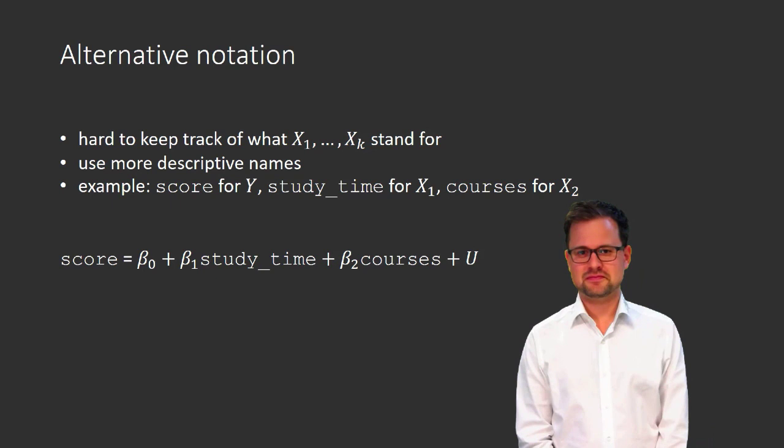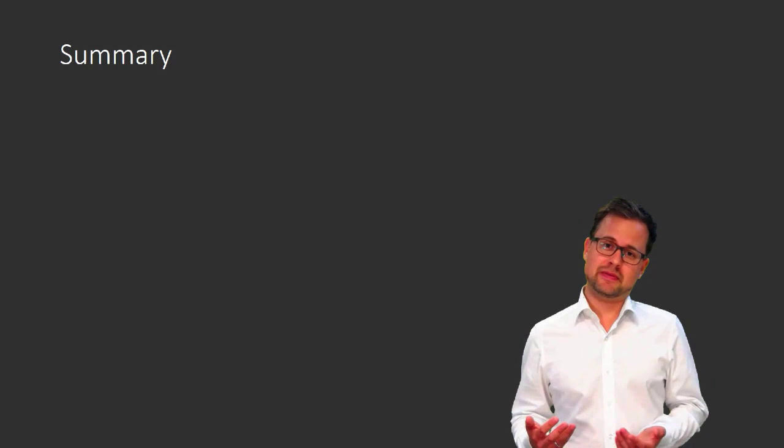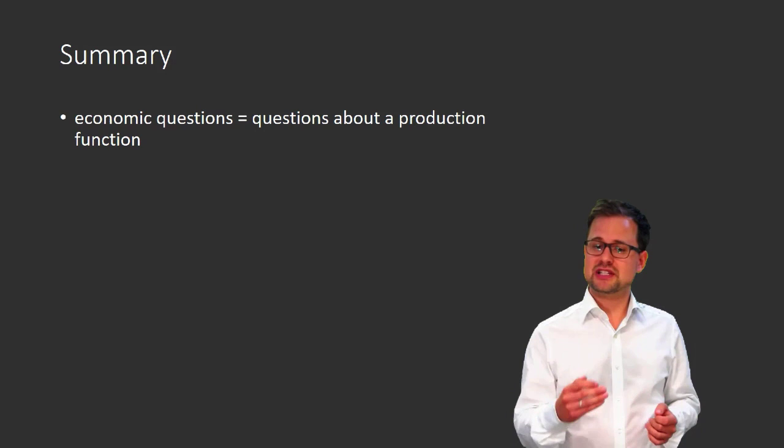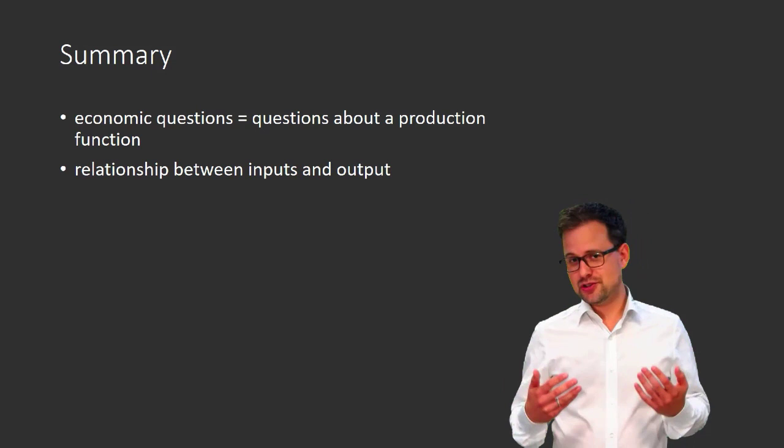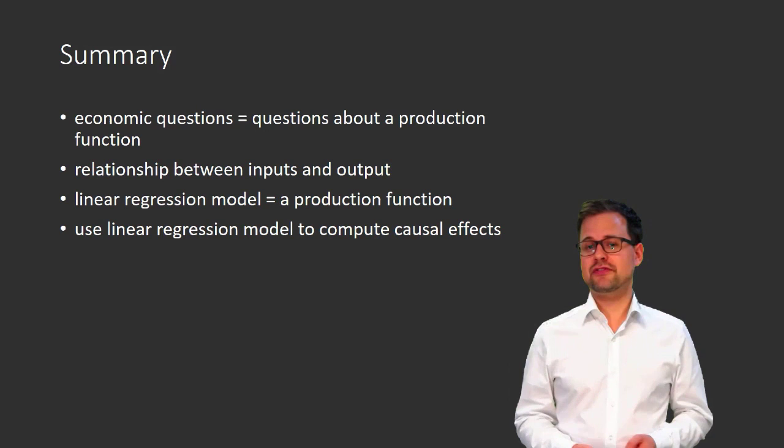This is the end of the video. To conclude, let me summarize the most important insights. First, many economic questions can be phrased in terms of questions about production functions — a production function describes the relationship between inputs and an output. We introduced the linear regression model, which we can interpret as a kind of production function. We used the linear regression model to compute causal effects, and these causal effects turned out to be related to the slope coefficients of the linear regression model.